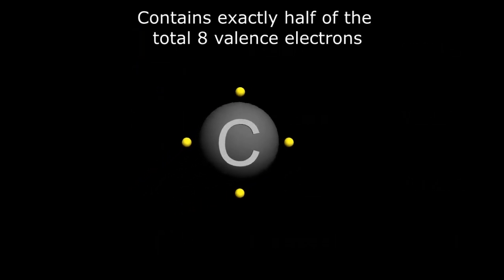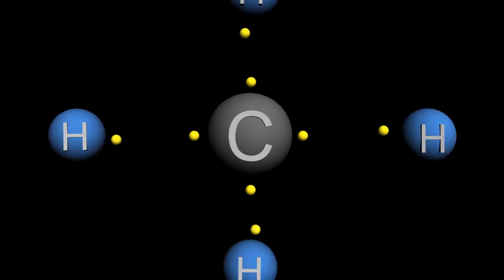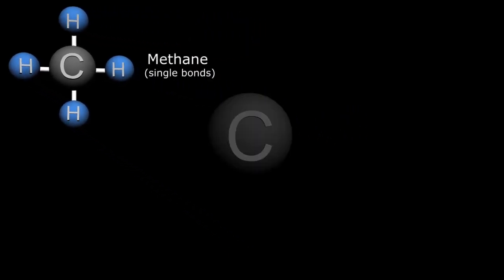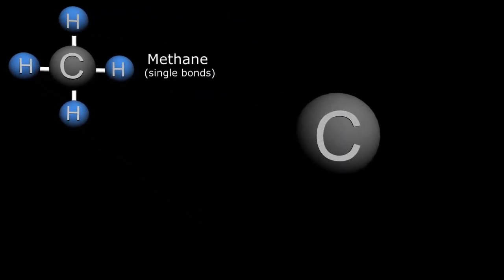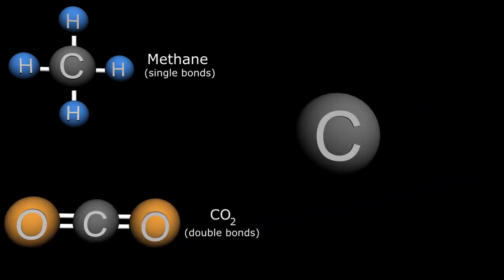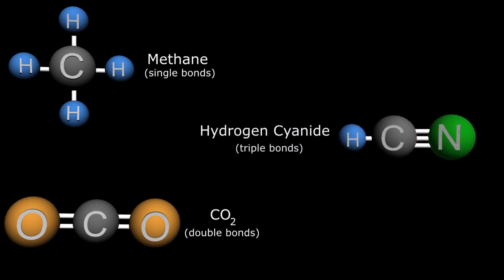Carbon, containing exactly half of the complete valence configuration of eight, affords its special status and has a rather unique ability to form either single bonds like in methane, double bonds in CO2, and even triple bonds as seen in hydrogen cyanide. With this multibond capability, carbon is considered the basic element of all living species on planet Earth.